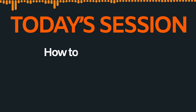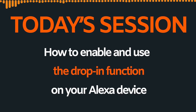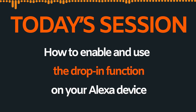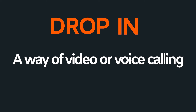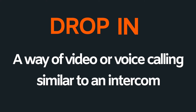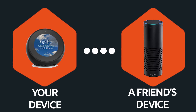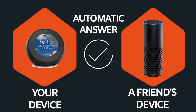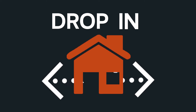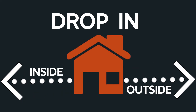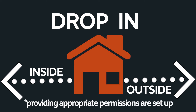This guide will help you get started with enabling and using the drop-in function on your Amazon Echo device. Drop-in is a way of video or voice calling, similar to an intercom call. When you place a call to another Echo device, it will automatically answer without the need for anyone to do anything. You can drop in on people both inside and outside of your home, providing appropriate permissions are set up.